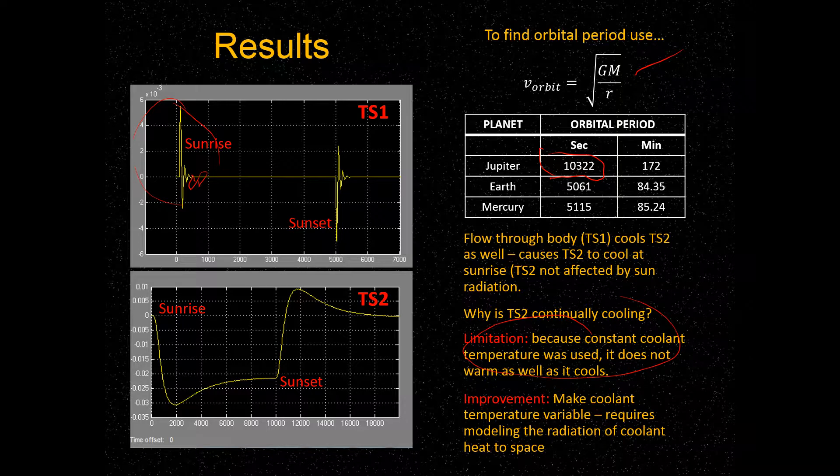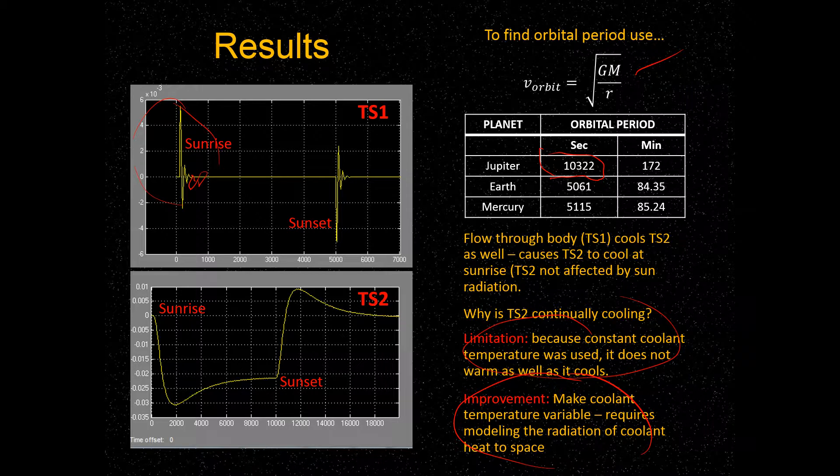One of the improvements that we could make on the model, if we were to do more work, is that we would make the coolant temperature variable. Now, this would require modeling the radiation of the coolant into space, which we didn't do, but if we did add that, this would become a more rigorous model, and I think we'd get better results.